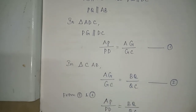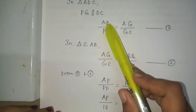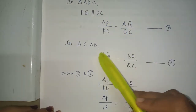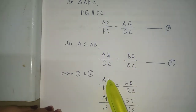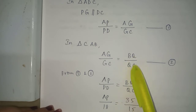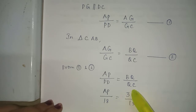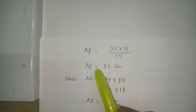From equations 1 and 2, we can write AP by PD is equal to BQ by QC. Substituting values: AP divided by 18 is equal to 35 divided by 15. So AP is equal to 35 into 18 by 15, which gives AP equal to 42 cm.